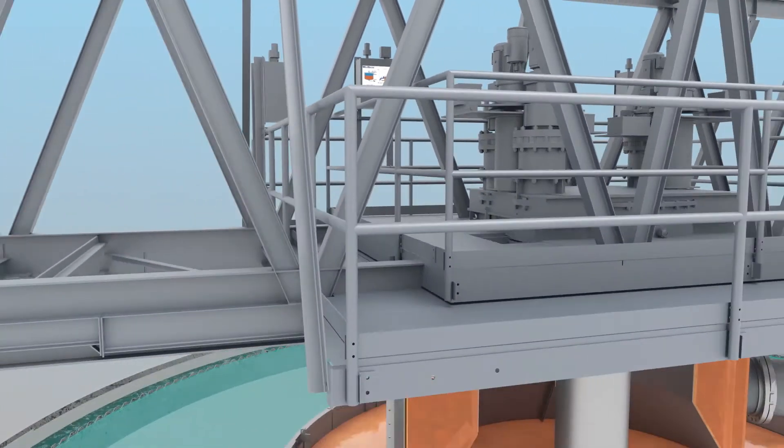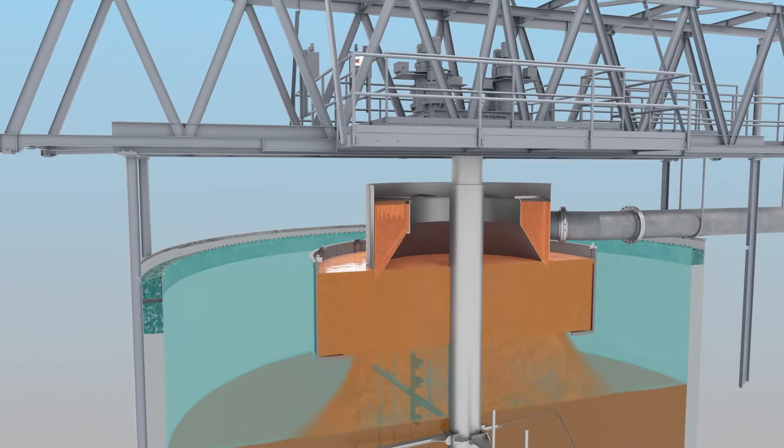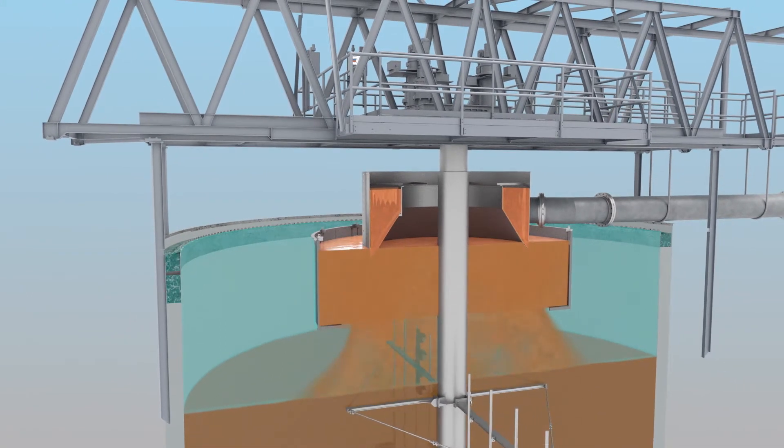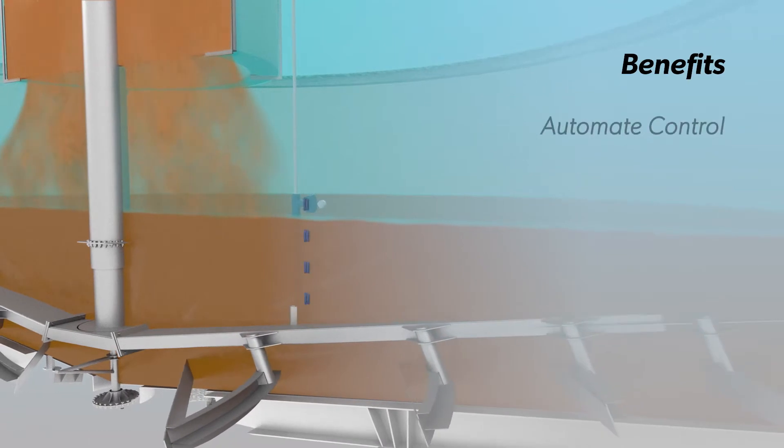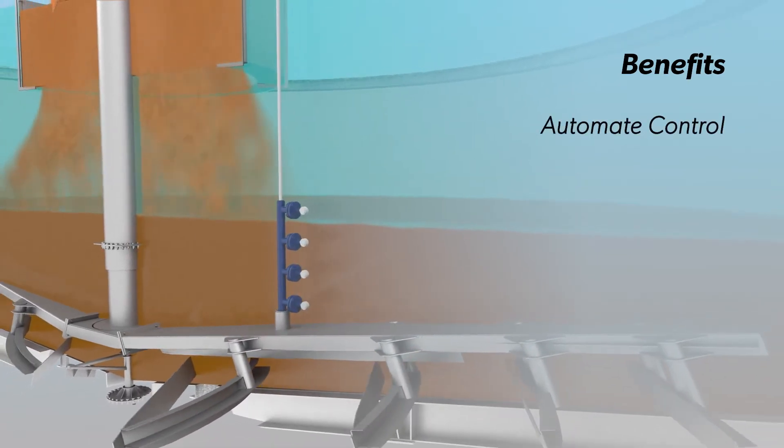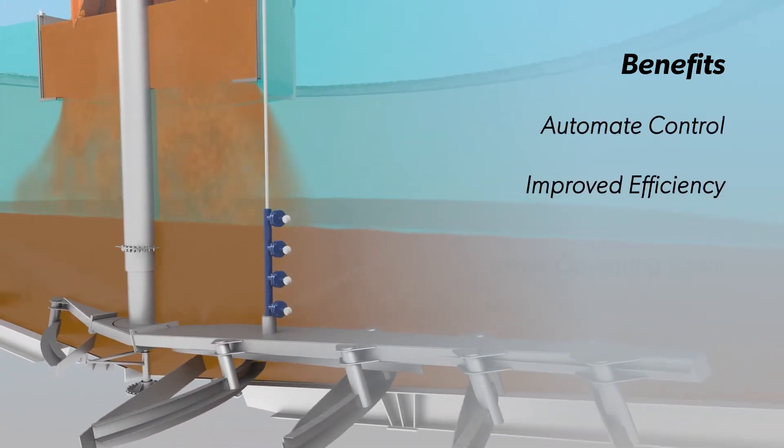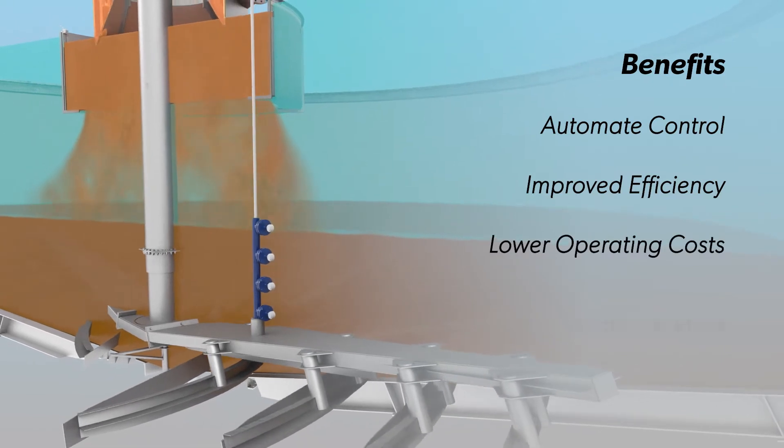Real-time feedback from the Mud Max enables plants to identify inefficiencies and make adjustments that optimize performance. The Mud Max provides data that enables the plant to automate control of the thickener underflow, providing improved efficiency, lower operating costs, and peace of mind.